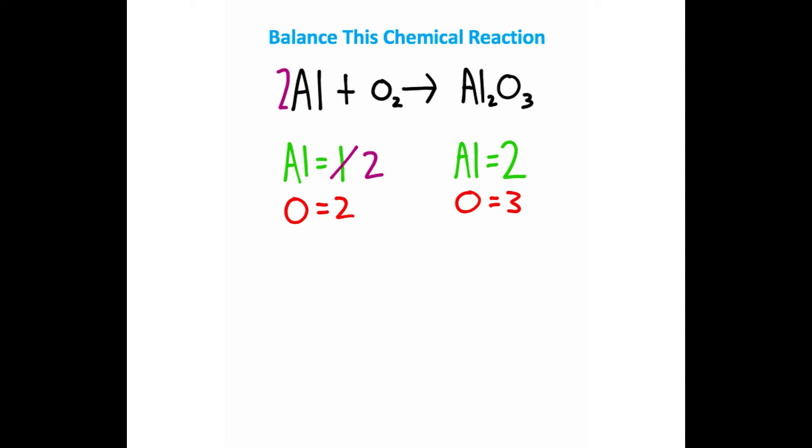If I take a 2 and throw it on the aluminum in the reactants, that's going to get the two aluminums to balance here. But now we need to balance the oxygens.